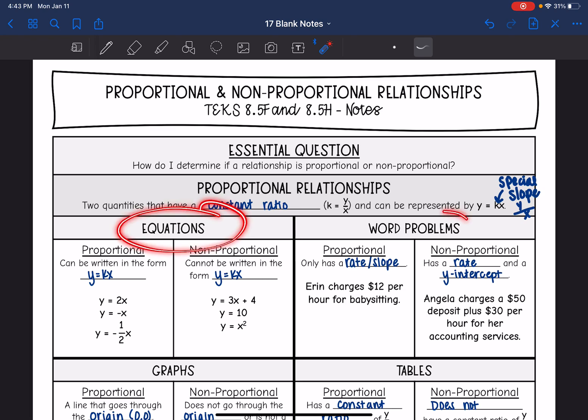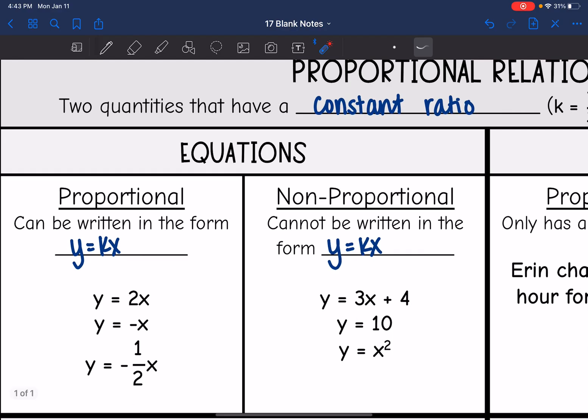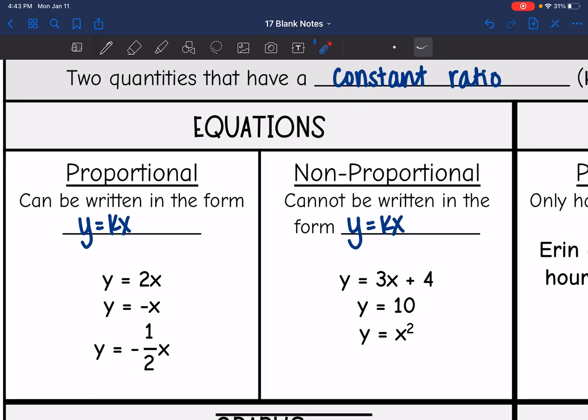Let's talk about how to determine if a relationship is proportional or not from these four different representations. Let's start with equations. A proportional relationship can be written in the form of y equals kx. These would all be examples of proportional relationships because they all have a y and an x and just a constant in front of the x. If you notice, there is no b value. We don't have a y-intercept - remember that, we'll see that in the graph as well.